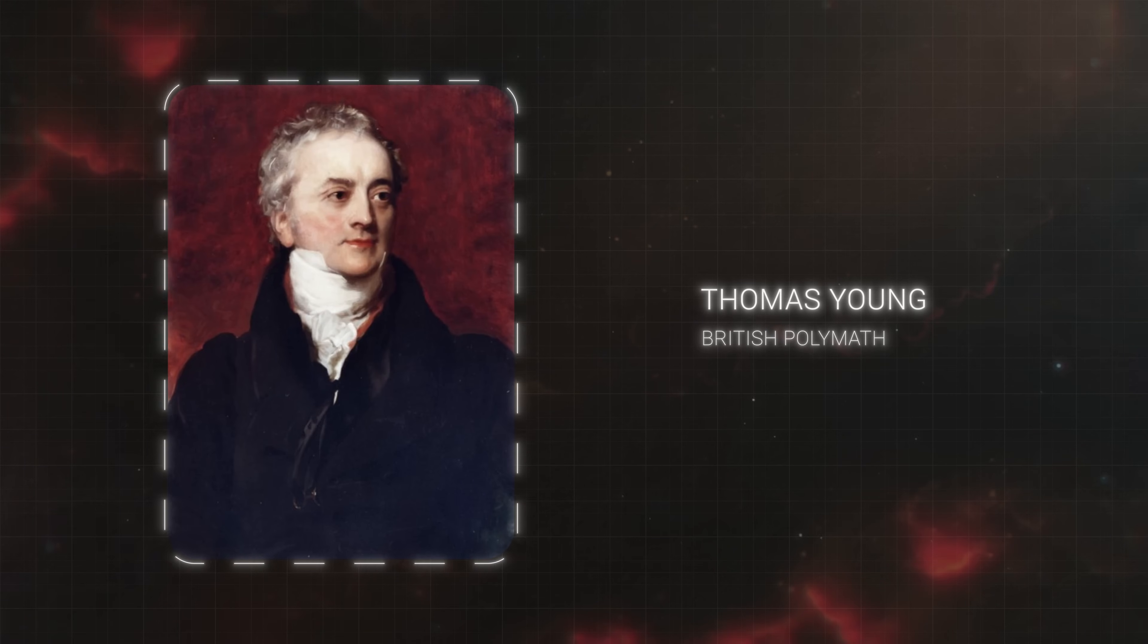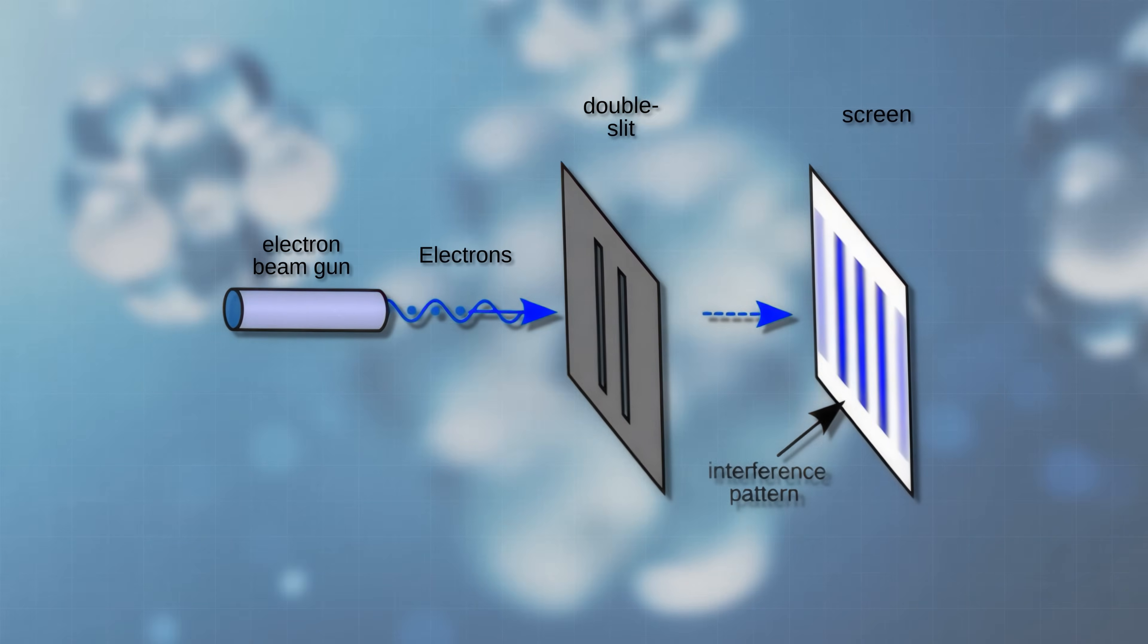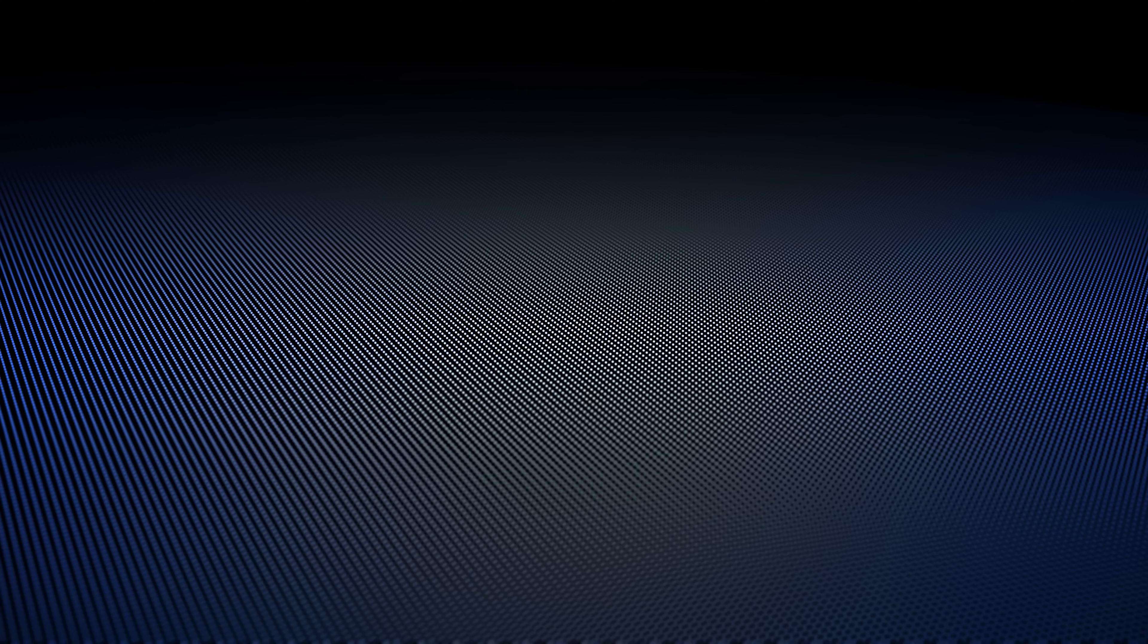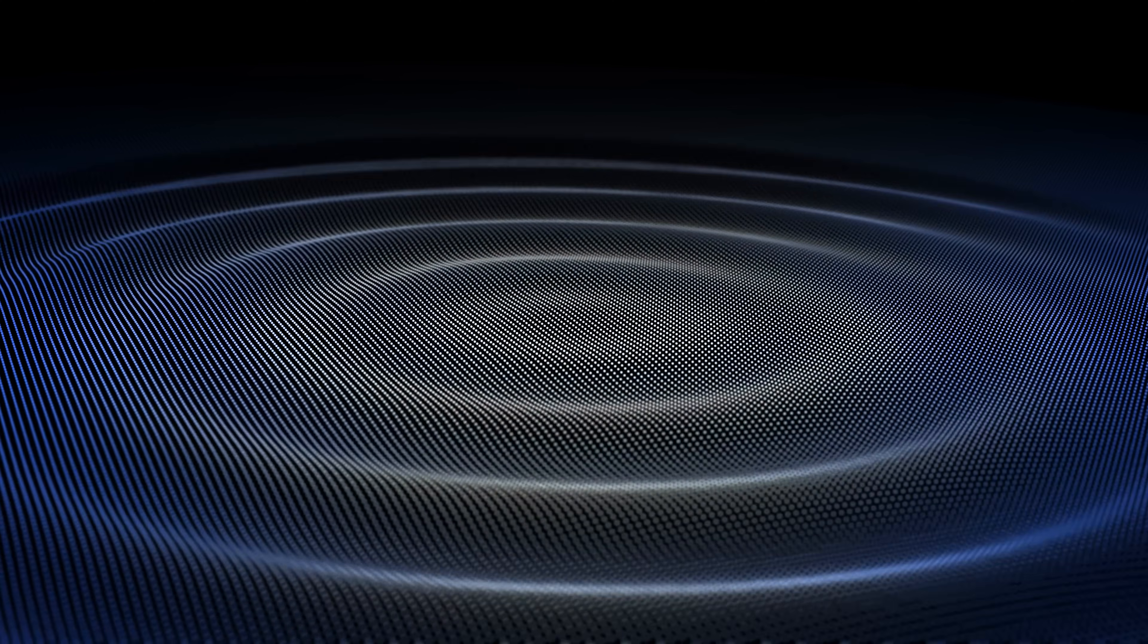Our story begins more than two centuries ago when Thomas Young passed light through two slits, expecting to see two bright spots as if light were made of particles. Instead, the light formed a series of bright and dark bands like ripples overlapping in a pond, showing that light acts like a wave.